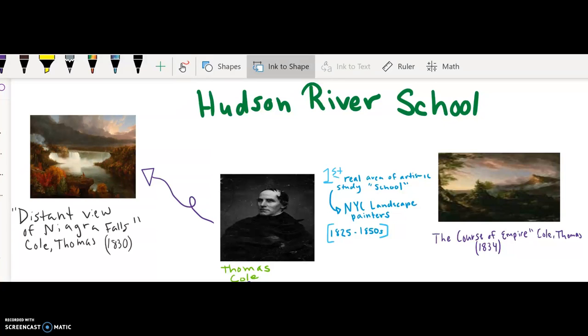The Hudson River School, what is it? Well, the Hudson River is a river that runs through New York. Specifically, in this case, New York City is what we're talking about because of the many landscape painters that were painting at this time due to Thomas Cole, who was the founder of this movement.